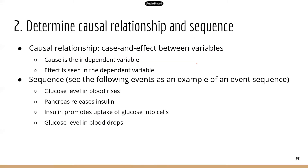Number two: determine causal relationship and sequence. This is basically just cause and effect. Cause is the independent variable — that's the variable you're testing. Effect is seen in the dependent variable, which is what you measure.